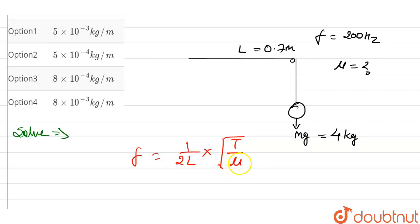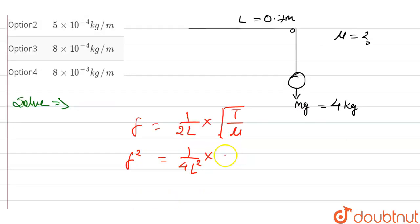So we have to find it. So what do we do? Square the equation. So this will be F squared is equal to 1 upon 4L square into T by mu.